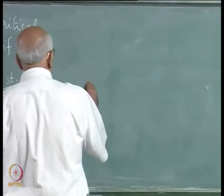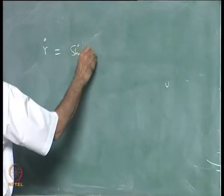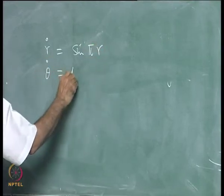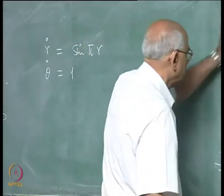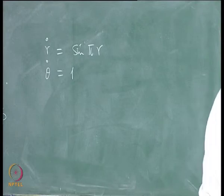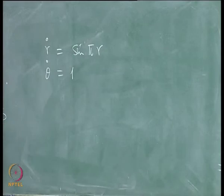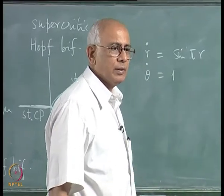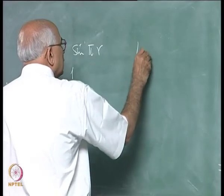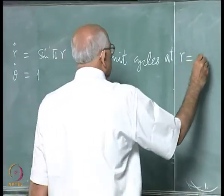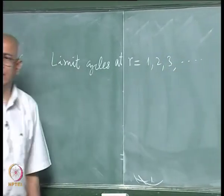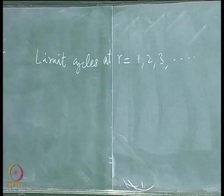Here is a simple example of a system with limit cycles: r-dot equal to sin(pi r) and theta-dot equal to 1 in polar coordinates. The right-hand side of the r equation vanishes when sin(pi r) equals 0, which gives limit cycles at r equal to 1, 2, 3, and so on. We do not yet know the nature of the critical point at the origin or whether these limit cycles are stable or unstable.